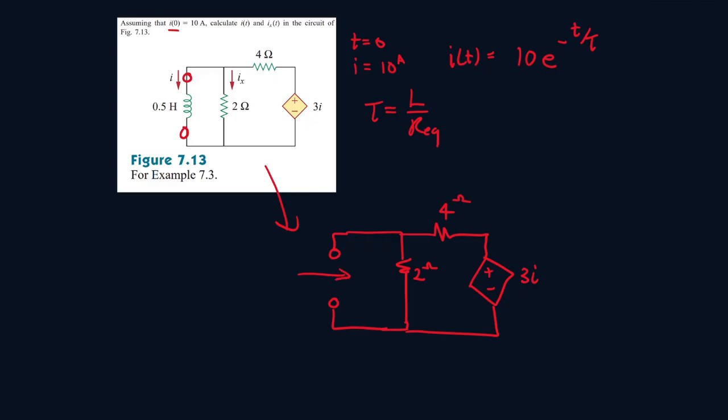Now, we have to find the resistance equivalent, which is equal to the Thevenin resistance here. But the problem is, due to this dependent source, we can't just combine all the resistors yet. So what we're going to do is implement a test charge, and we're going to call this 1 volt. The Thevenin resistance equivalent will be 1 over the current I0. I0 will be moving in this direction. We already see I0 will be equal to negative I because they're both moving in different directions.